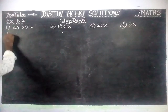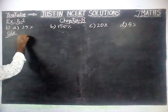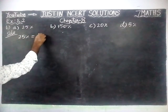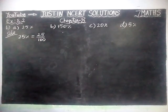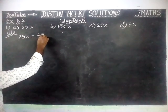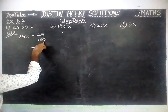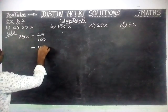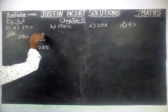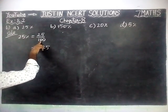First, part A: 25%. This can be written as 25 divided by 100. When we are dividing 25 by 100, there are 2 zeros, so the answer is 0.25. When we are dividing a number by 100, there are 2 zeros, so we have to make 2 decimal points.